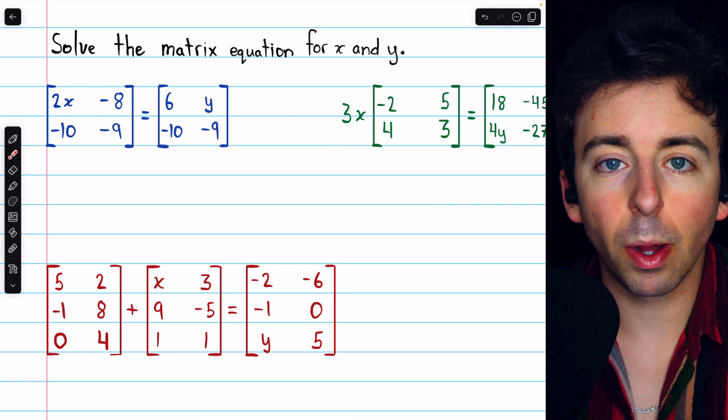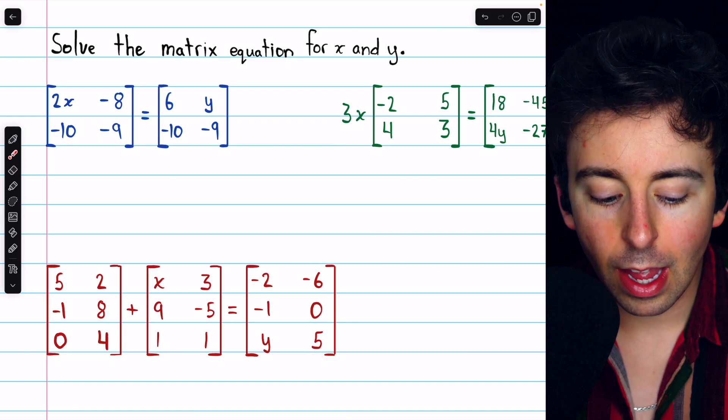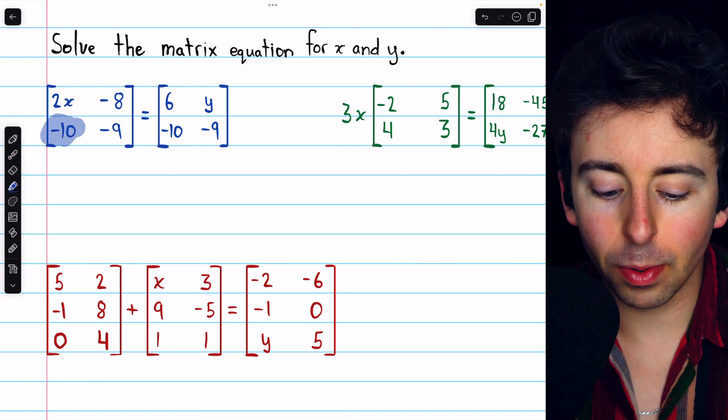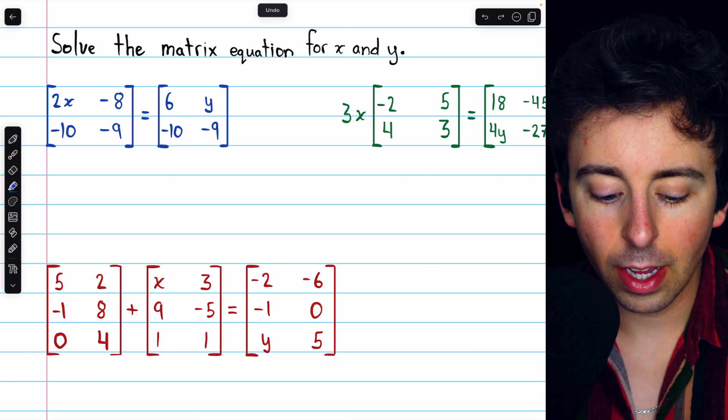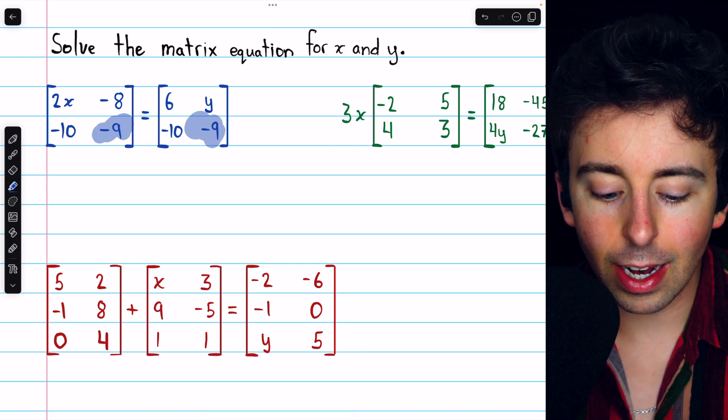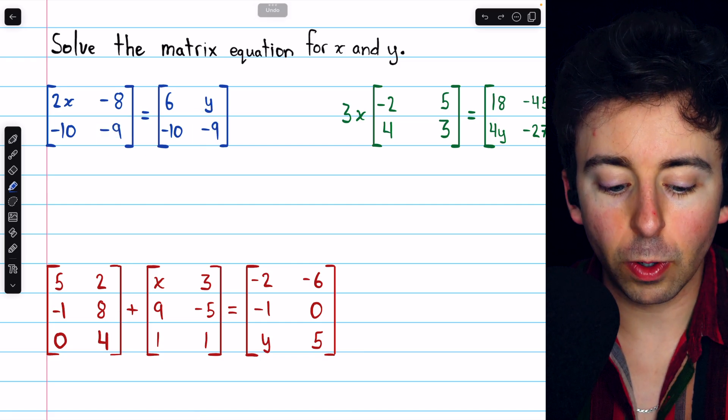We know that for these two matrices to be equal, it must be that their corresponding entries are equal. And we can already see that, for example, negative 10 equals negative 10, negative 9 equals negative 9. From the other two entries,